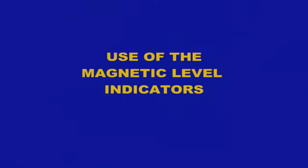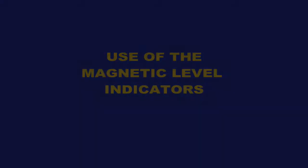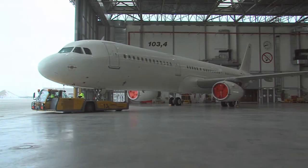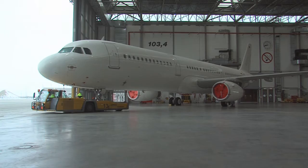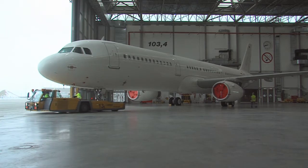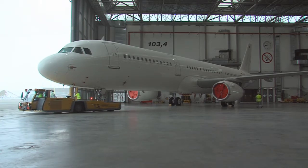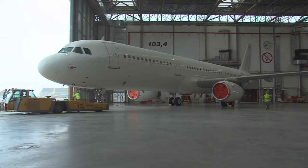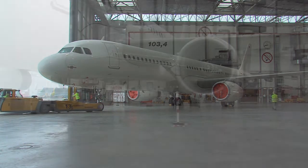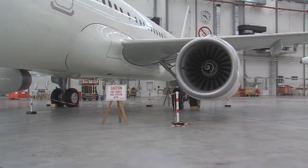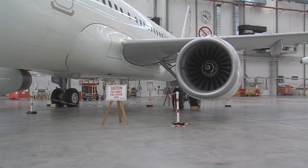Use of the magnetic level indicators. The magnetic level indicators are a secondary direct reading gauge to calculate the fuel in the aircraft tanks if the fuel quantity indication system is unserviceable. You must follow the fuel safety procedures when working with the fuel system.